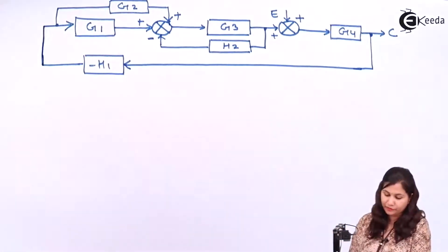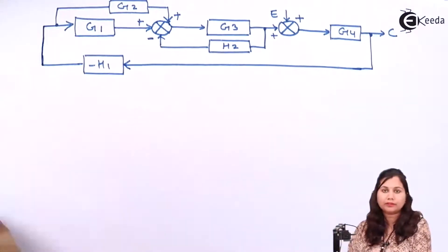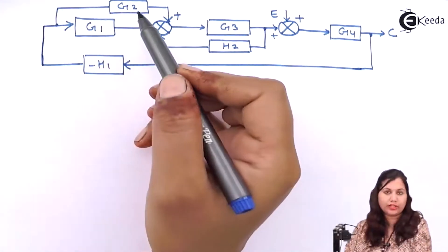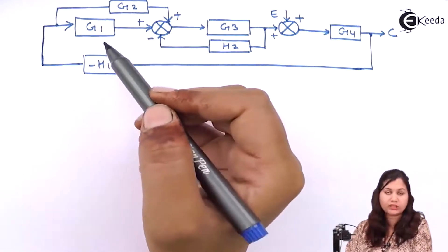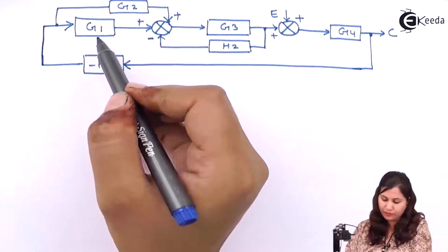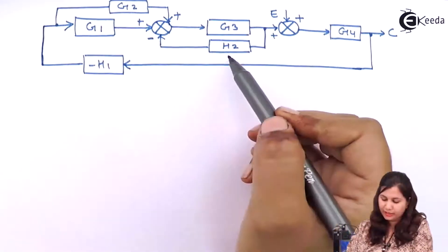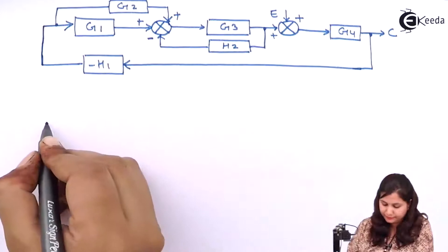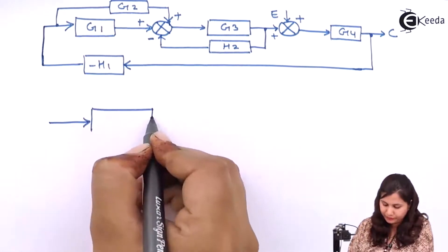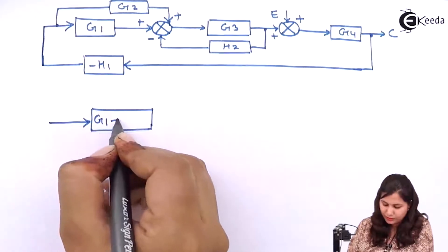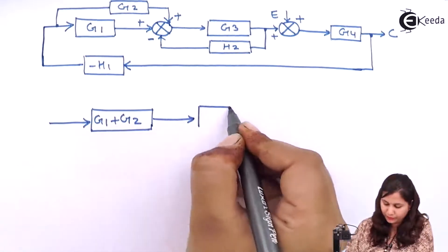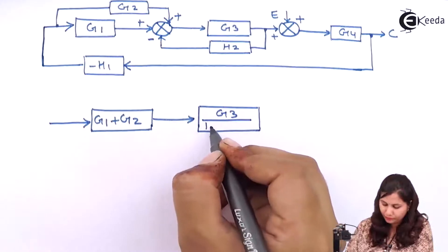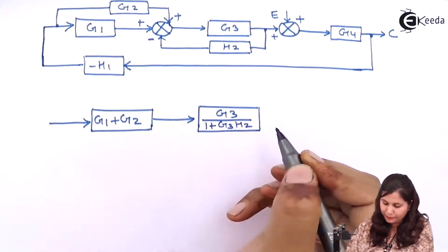This is the way the block diagram will be changed if we assume input R equals zero. Now you can see that blocks G1 and G2 are in parallel, so we can replace them with a single block having transfer function G1 plus G2. And G3 and H2 are forming a feedback loop, so we can reduce them. We will have G1 plus G2 here, and the feedback loop reduced to G3 upon 1 plus G3H2.